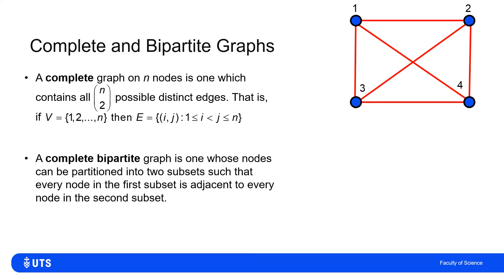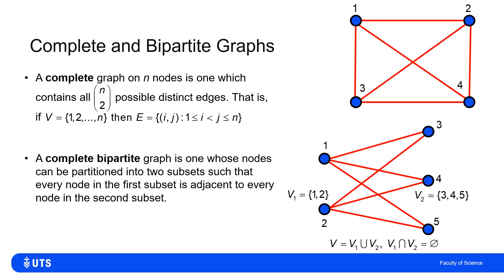A similar concept is the idea of a bipartite graph. A complete bipartite graph is not one where every node is joined to every other, but one where we can split the nodes into two subsets such that every node in one subset is adjacent to every node in the other subset. For example, with five nodes one through five, we can split into subset V1 containing nodes one and two, and subset V2 containing nodes three, four, and five, with edges between every node in V1 and every node in V2.